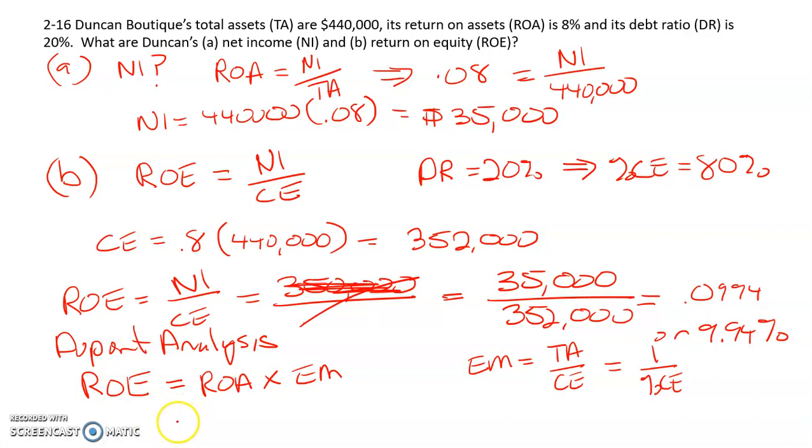We know our ROA is 8%, and we can do one divided by 0.8. We get a little bit of a rounding error here, but that's 0.1 or 10%, pretty close. The DuPont analysis gives us a second way to calculate ROE.